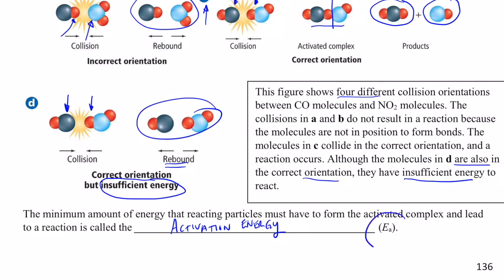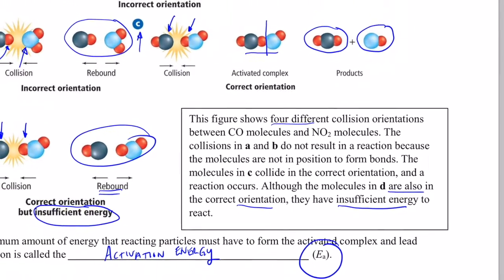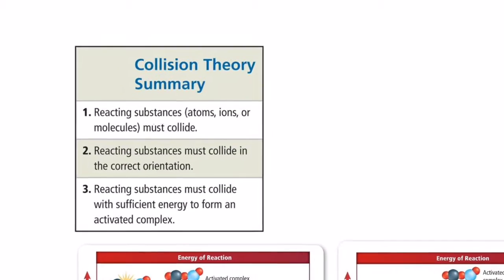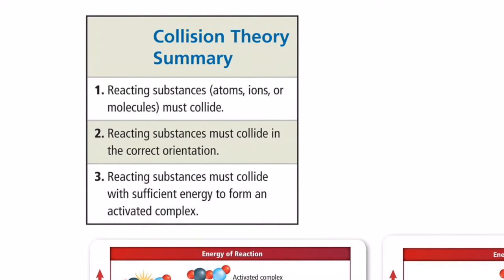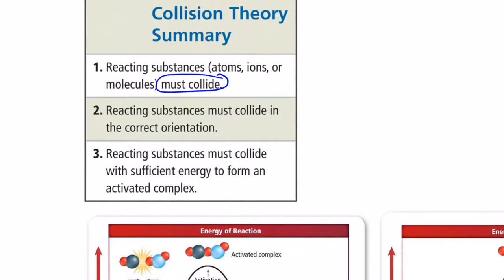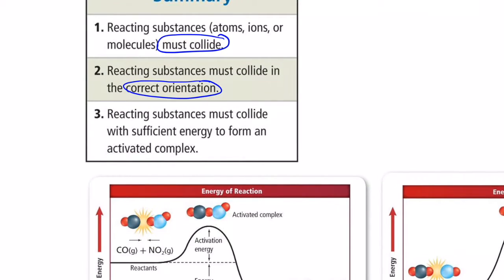Activation energy is symbolized by capital E sub A. Here's a quick summary of collision theory: reactant substances — atoms, ions, or molecules — must collide. They must collide in the correct orientation. And reacting substances must collide with sufficient energy to form the activated complex.